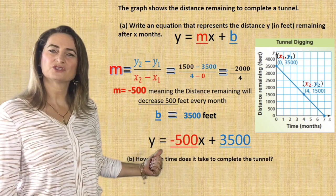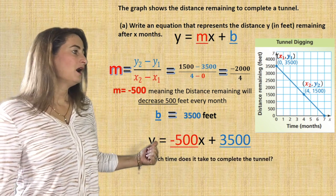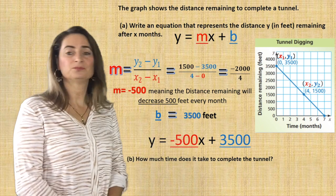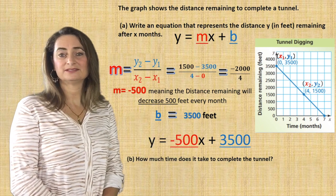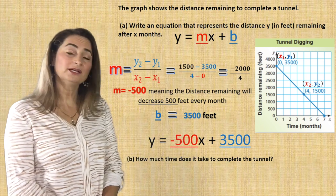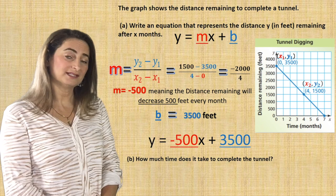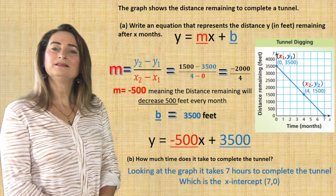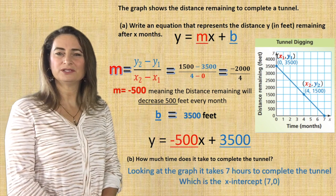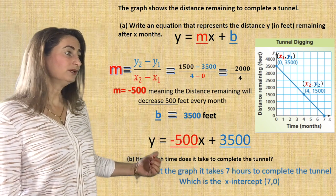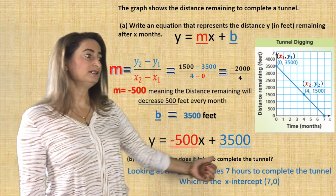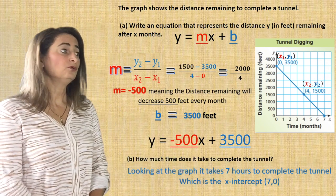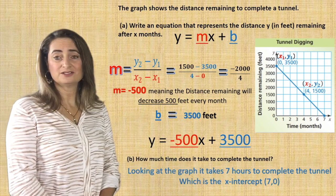Now let's answer: how much time does it take to complete the tunnel? When the distance remaining equals 0, look at the x-axis on the graph — it takes 7 months to complete the tunnel, which is the x-intercept.